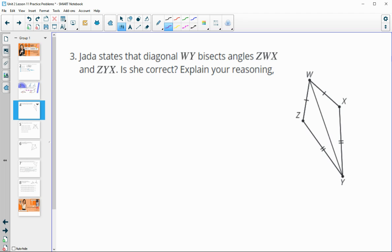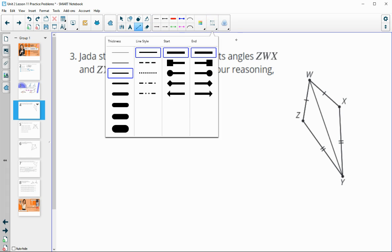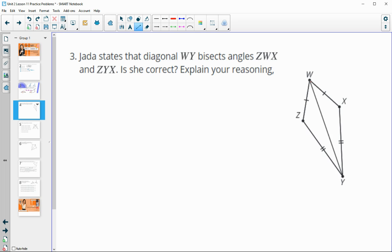Number three, Jada states that the diagonal WY bisects, whoops, WY is bisecting angle ZWX, so up here, and angle ZYX. Is she correct? Explain your reasoning.